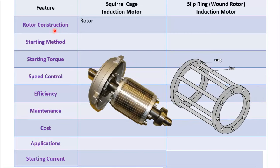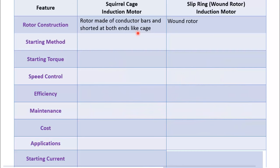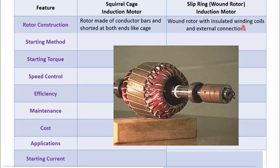Construction wise, squirrel cage motor has a rotor made of a cylindrical core with conductive bars. The bars are shorted at both ends by end rings, resembling a squirrel cage. Slip ring motor has insulated windings with slip rings and brushes for external connections.